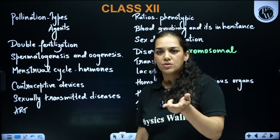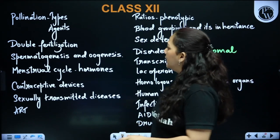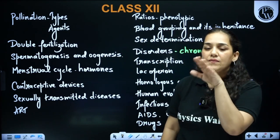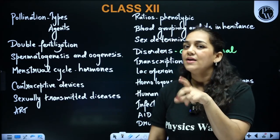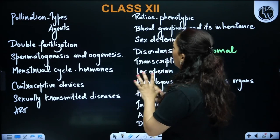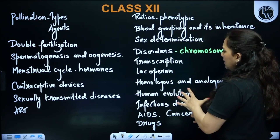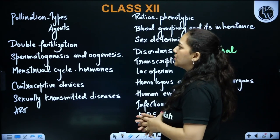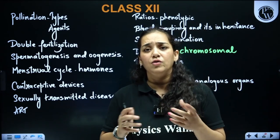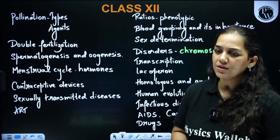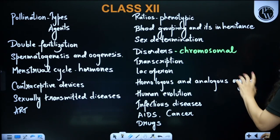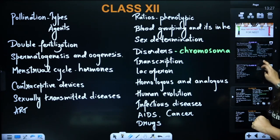Even between those two, if I have to choose, it would be Molecular Basis of Inheritance as the most difficult. In the menstrual cycle, they can play around with hormone concepts to increase difficulty. But overall, the difficulty of the paper is mostly decided by these specific chapters, based on what previous papers have shown.